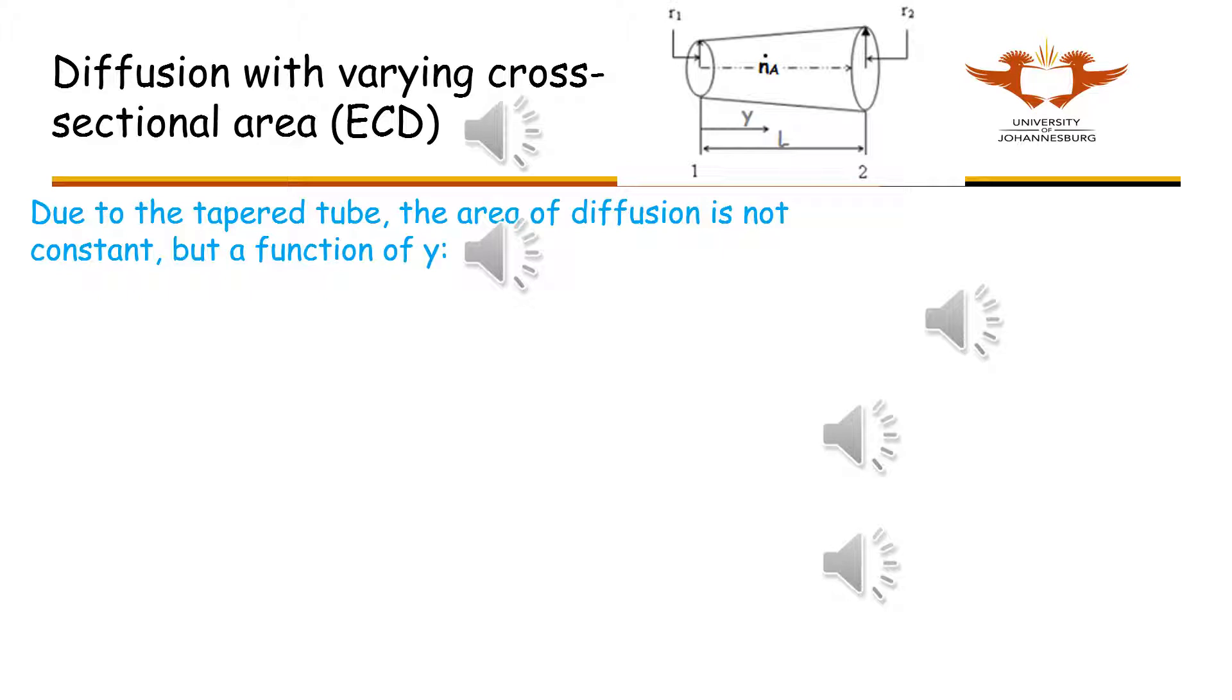The molar flow rate is equal to the molar flux N A times the cross-sectional area, which is pi R squared. For the calculation of R, say you are halfway between points 1 and 2, then you should add half the radius increase R2 minus R1 to the initial radius.